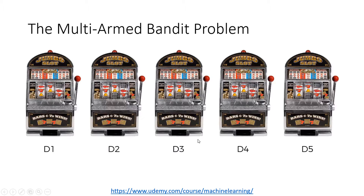Just in a nutshell, we are going to try to explore and exploit at the same time, so that we can find the machine that has the best distribution. And we are going to do that in the least amount of time possible. If you want a better discussion about this, just check the previous video about the multi-armed bandit problem.